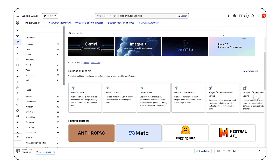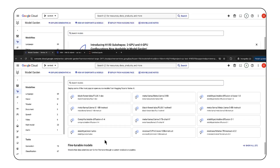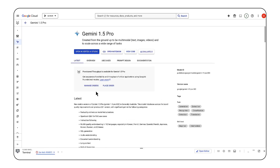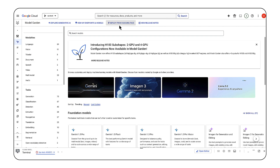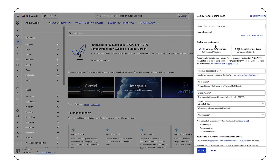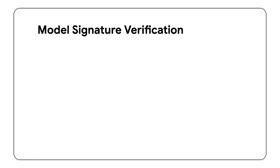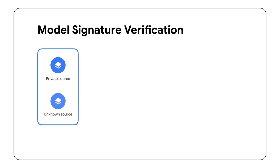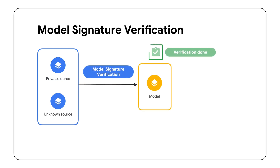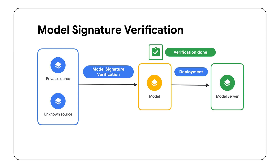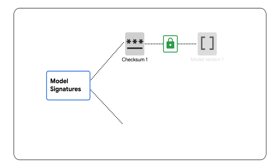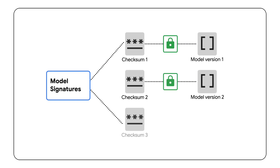Model Garden has hundreds of curated, pre-trained machine learning models and provides a one-click deploy option to Vertex AI, Google Cloud's AI platform. You can also choose to import models directly from Hugging Face into Vertex AI with a couple tweaks. But if your model is from a private or unknown source, verifying the model's signature before deployment is a critical security best practice. A model's signature is a cryptographic checksum that uniquely identifies a specific version of your model — think of it like a digital seal of authenticity. If you're deploying a custom-trained model, the signature is created during the model development phase.